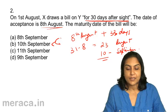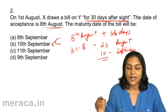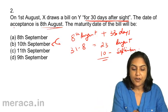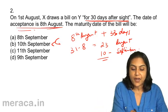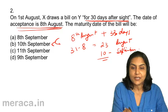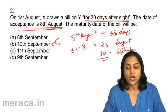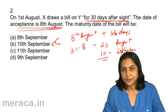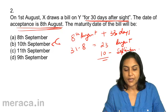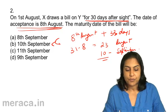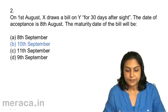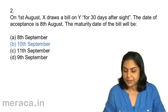10th September. For 30 days after sight, the date of acceptance is the date from which we begin — 8th August. Correct answer is 2b, 10th September.